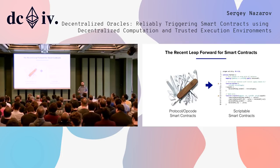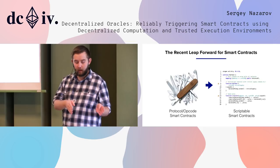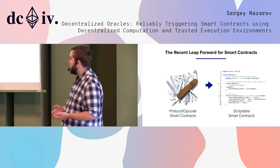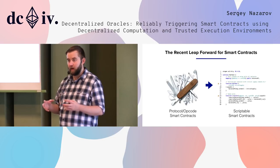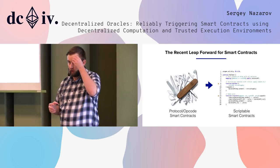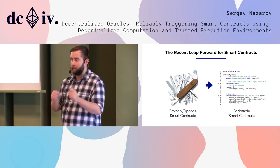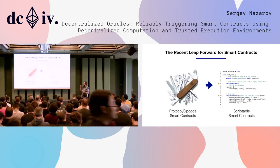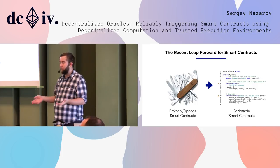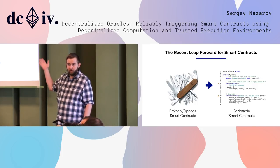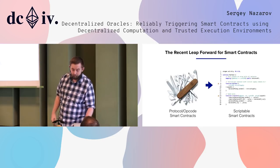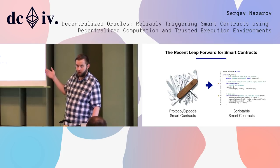Ethereum does deserve a lot of credit for taking contracts from the protocol opcode level over into the world of scriptable smart contracts, which is the world we're now becoming more used to. This world of scriptable smart contracts provides a lot of flexibility and new features that have pulled a lot of people in and created a lot of useful use cases. You no longer need to ask somebody to add a smart contract type at the protocol level, wait months for it to get merged in, or experience a hard fork. You can now code up a contract without having to do anything at the protocol level. Smart contracts keep getting adopted more and more the more useful features they have.